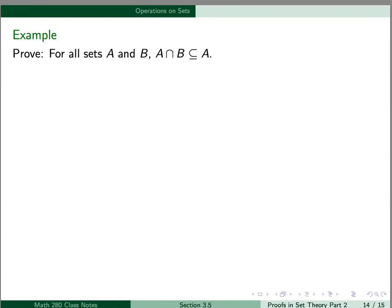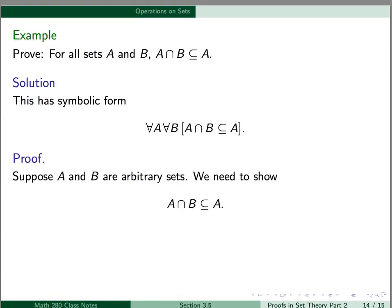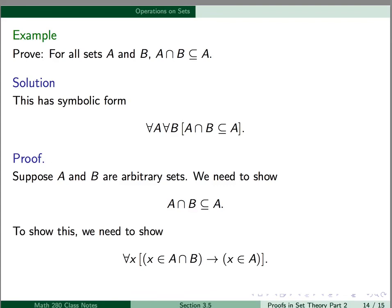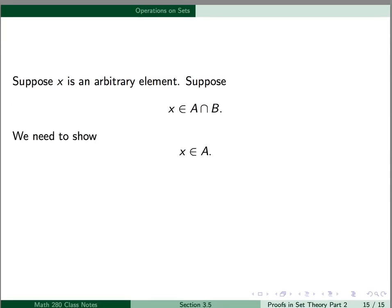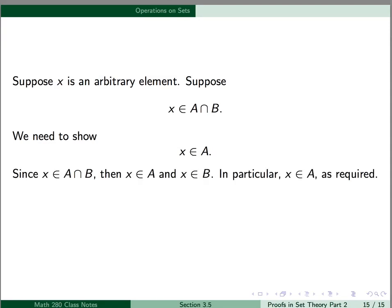Now let's do a proof involving set operations. We want to prove that for all sets A and B, A intersect B is a subset of A. In symbolic form: for all A, for all B, A ∩ B ⊆ A. We suppose A and B are arbitrary sets and need to show A ∩ B ⊆ A. By definition, we need to show: for all x, x ∈ A ∩ B implies x ∈ A. We use proof by arbitrary element: suppose x is arbitrary and x ∈ A ∩ B. Then x is an element of both A and B. In particular, x is an element of A, which is what we needed to show. This proves A ∩ B ⊆ A.